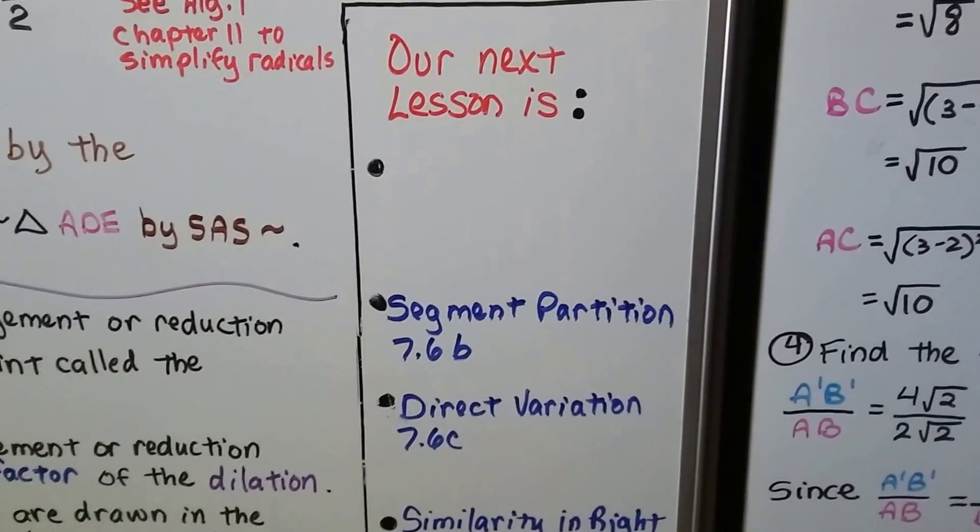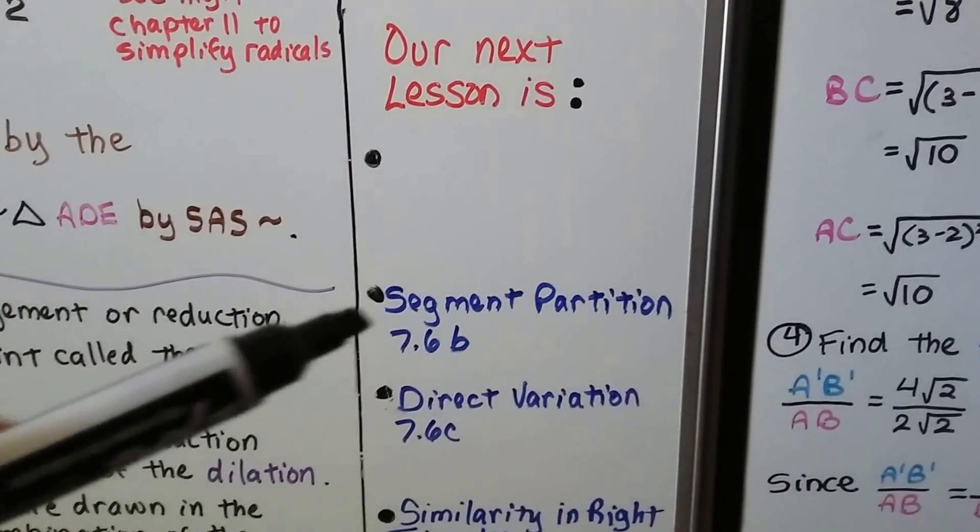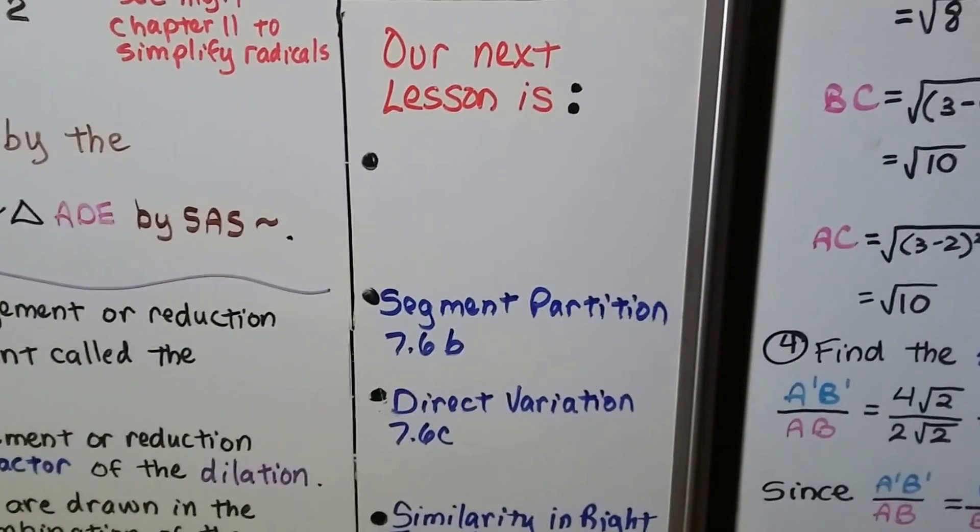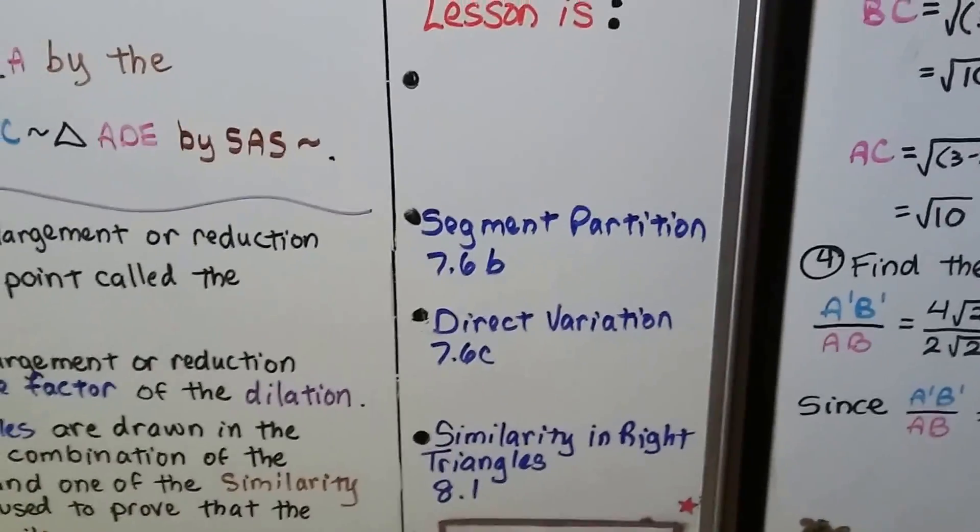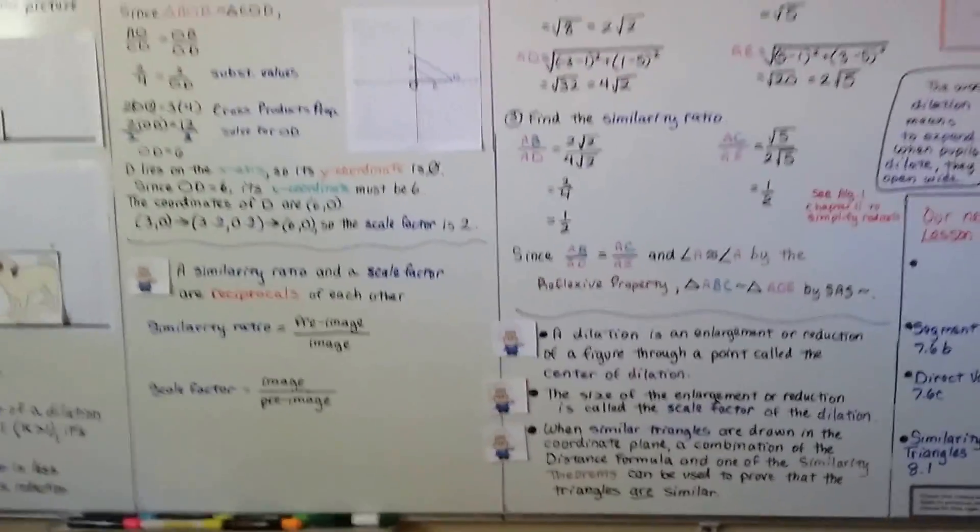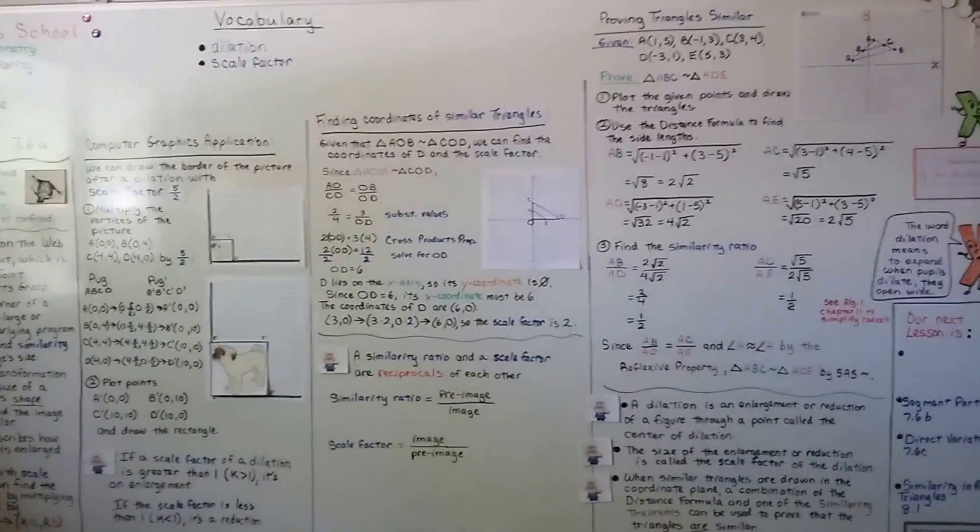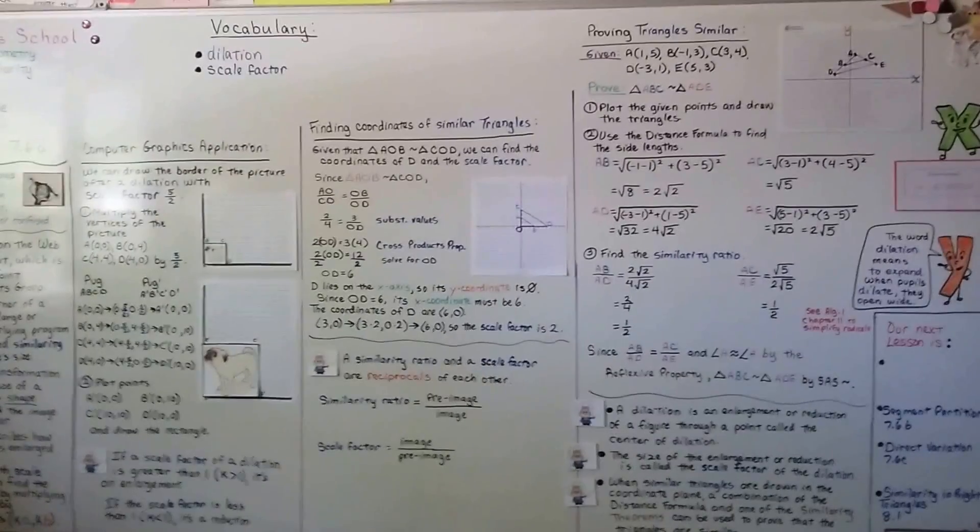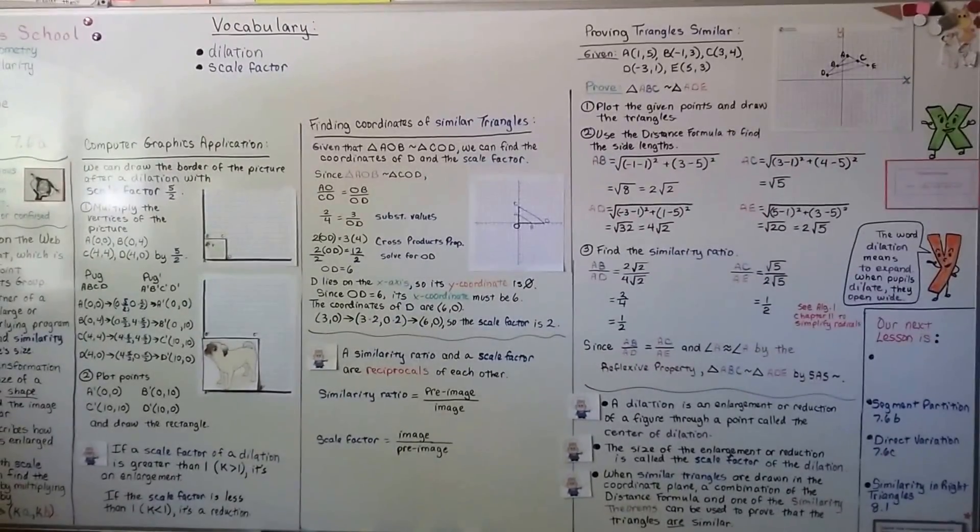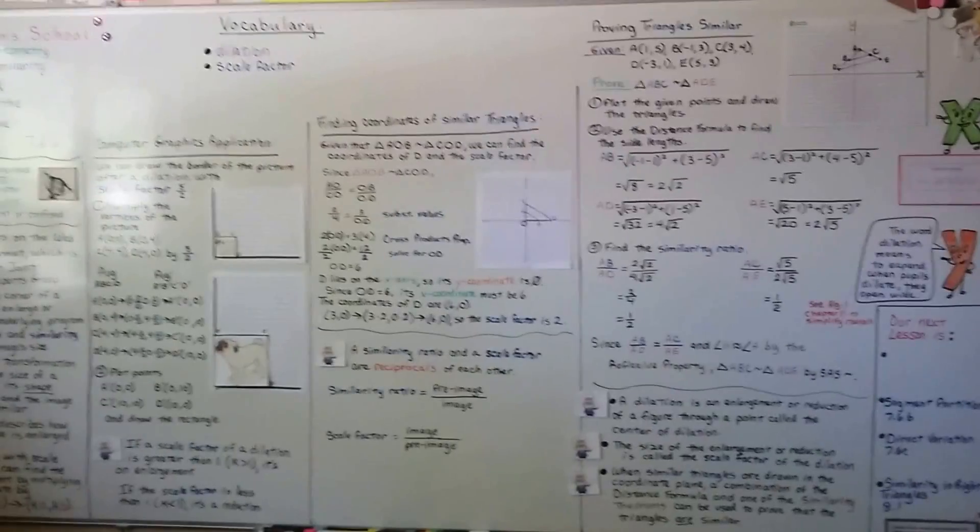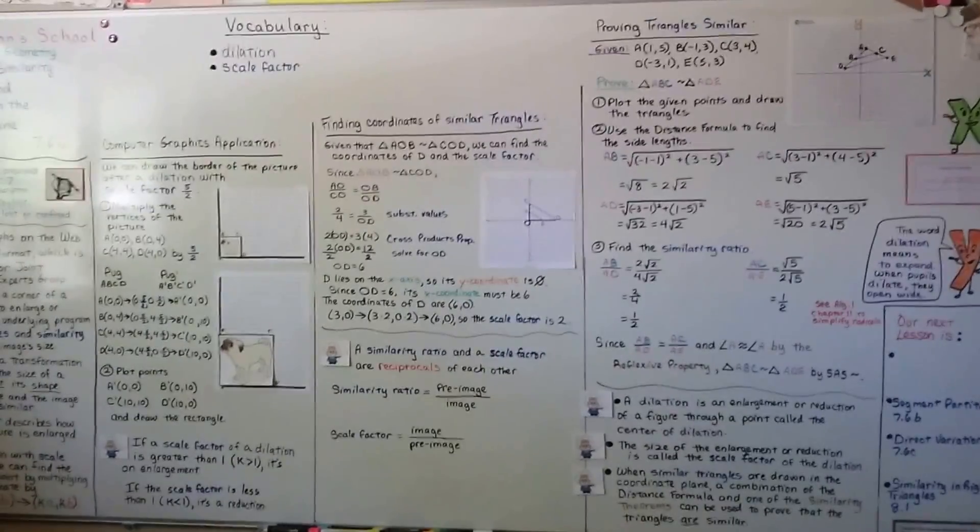Our next video is segment partition. That's the second part of this lesson. After that, we're going to do direct variation before moving on to chapter eight. So now you know what JPEG stands for. I hope you can do proving triangles similar using these similarity theorems. Have a great day. I'll see you next time. Bye.